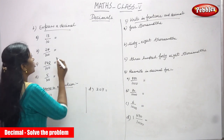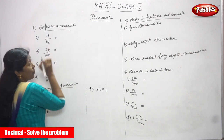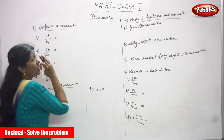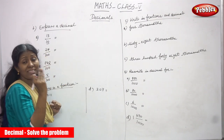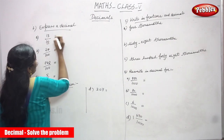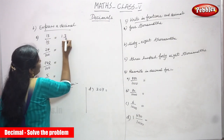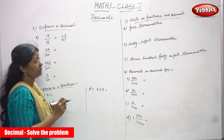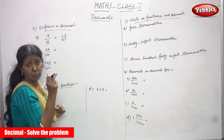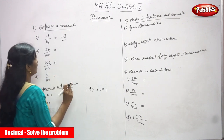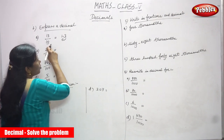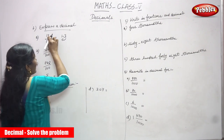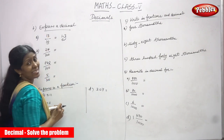To convert to decimal, look at the denominator. In 10, there is only one zero. So you have to put a point moving from right to left — only one digit. So 13 becomes 1.3. The answer is 1.3.